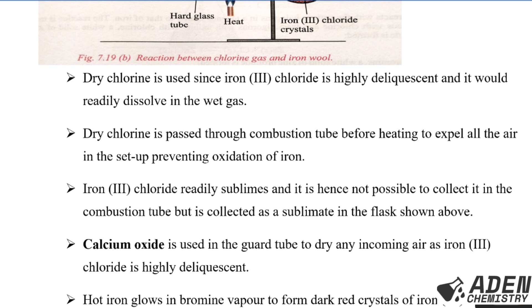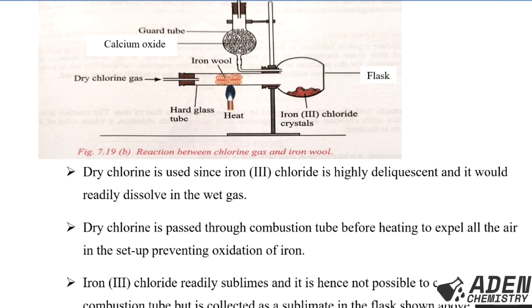Dry chlorine is used because iron(III) chloride is highly deliquescent. Deliquescent substances are substances that absorb moisture from the atmosphere and re-dissolve in the absorbed water. Additionally, dry chlorine is first passed through the combustion tube before heating the iron, in order to expel all the air from the setup, preventing oxidation of the iron.